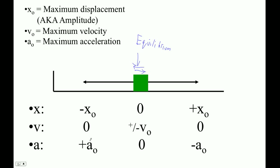Acceleration is the opposite. In the middle there's no force because force is minus kx on a spring — if x is zero, there's no force and therefore no acceleration. When it's all the way to one side, the force is pulling it toward the middle. So even though its velocity is zero there, it has the maximum amount of force pulling it toward equilibrium. It's actually at negative maximum acceleration on one side, and maximum on the other.